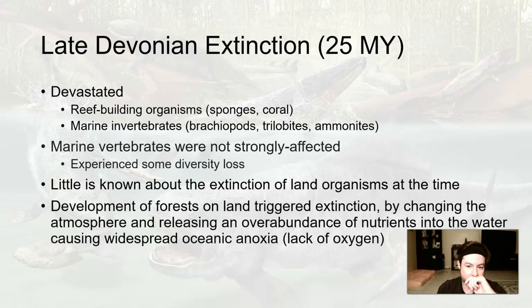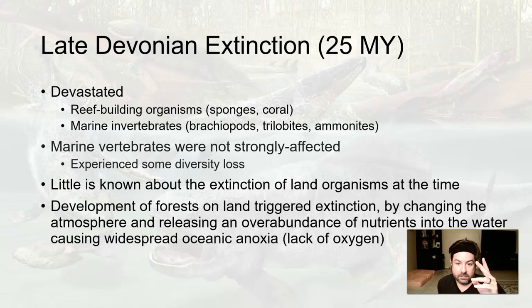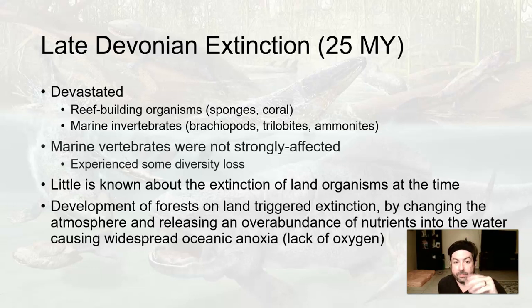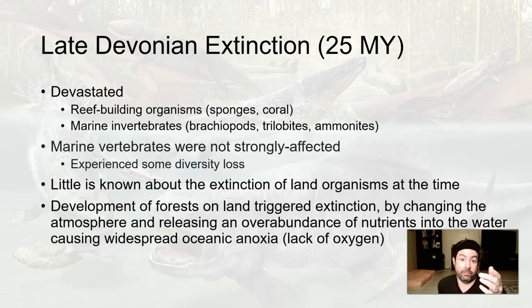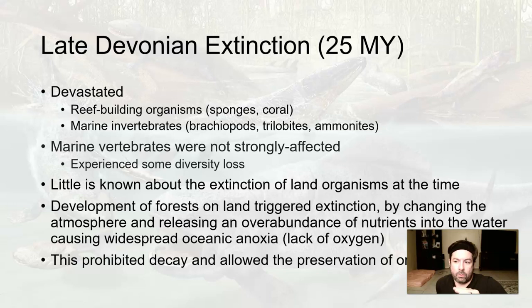What may have triggered this extinction, interestingly, is the development of forests and plant diversification. More plants taking in CO2 and giving out oxygen changed the atmosphere. There was also an overabundance of nutrients going into the water, causing widespread oceanic anoxia — a lack of oxygen. As plants were creating soil and their roots dug into the ground, they broke up rocks. This weathering process via plants is called root wedging, which released minerals into waterways.